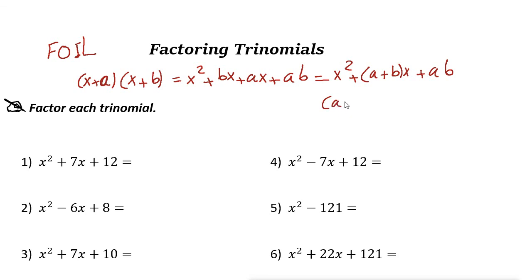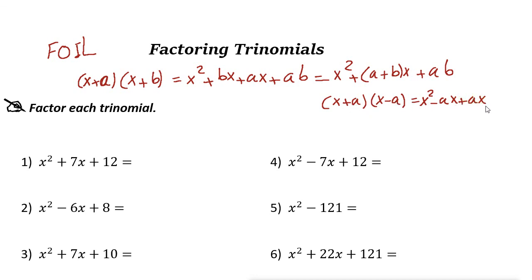For example, if you have (x + a) times (x − a), let's use FOIL and multiply these two. x times x is x squared; x times negative a is minus ax; a times x is plus ax; a times negative a is minus a squared. Now these two middle terms cancel out because it's negative ax and positive ax.